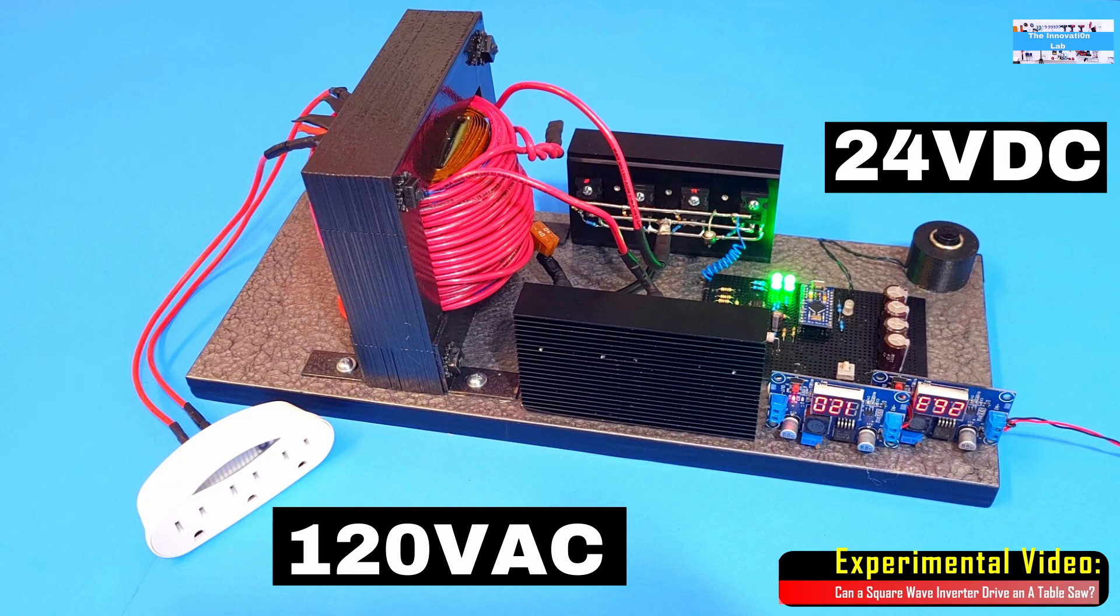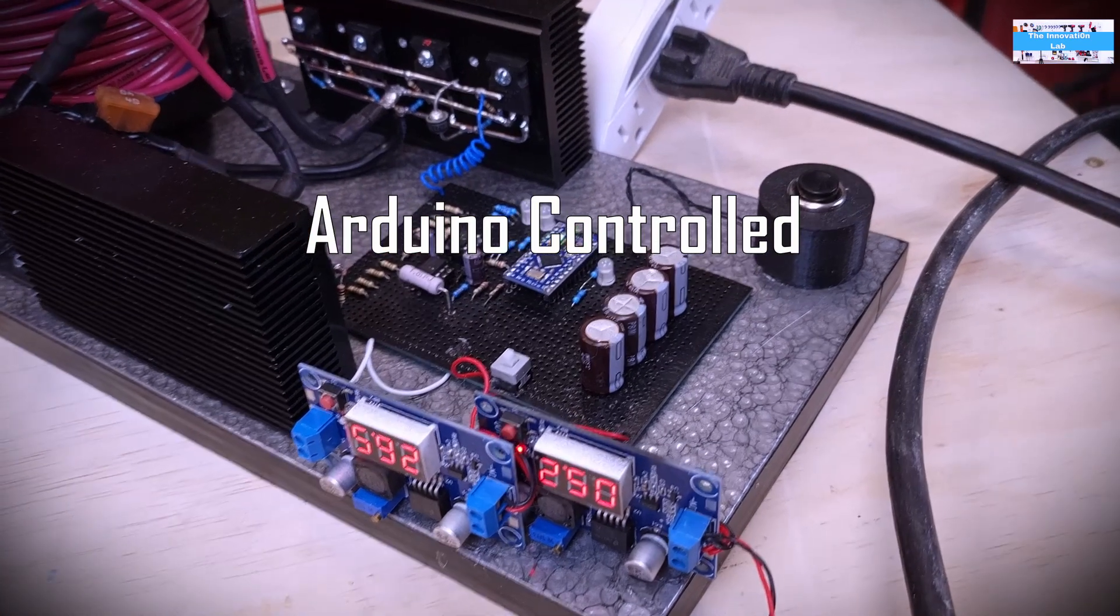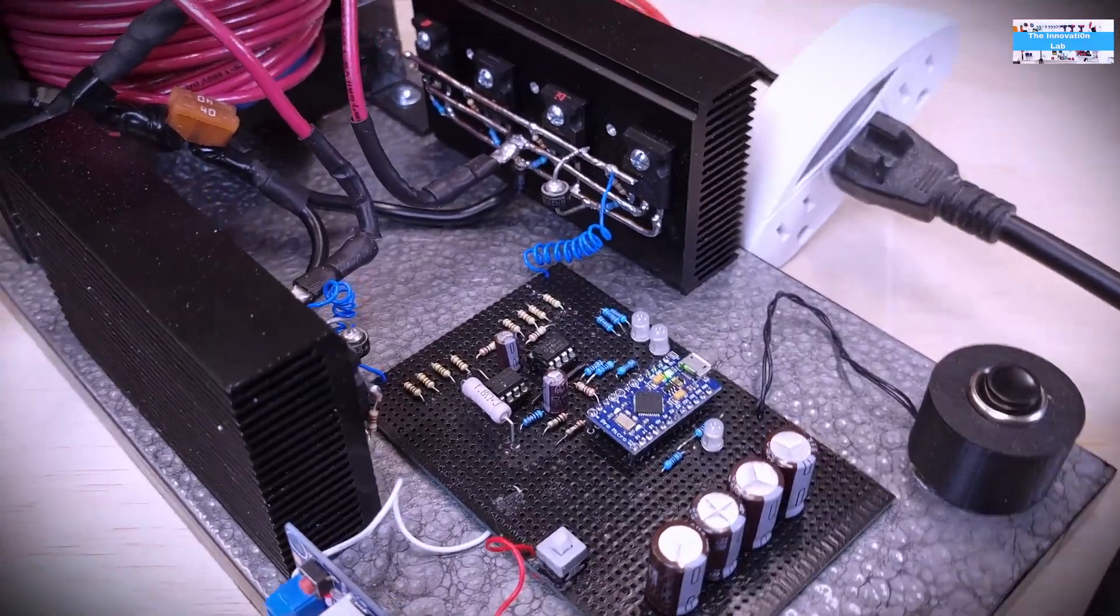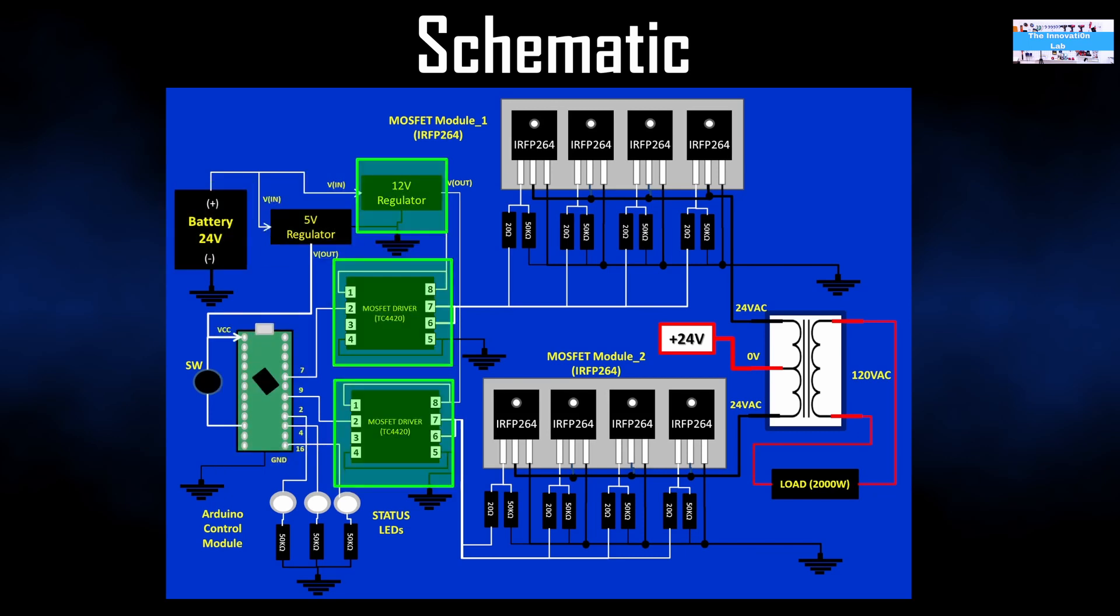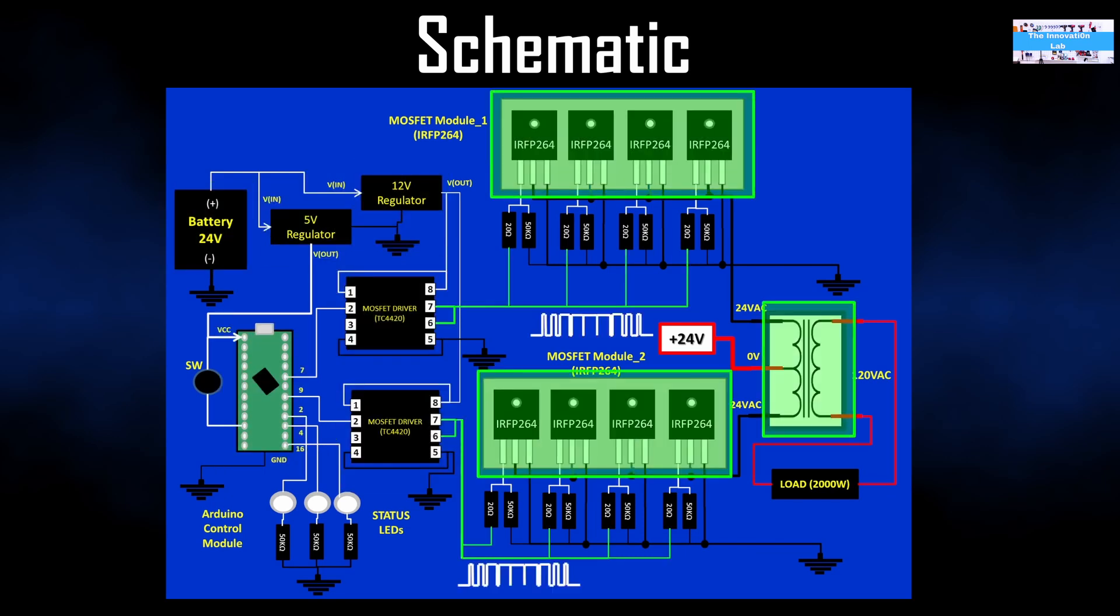I made a video to show this design. If you like you can go check out the video but it's very simple. So I'm using an Arduino microcontroller to provide the square wave pulses that drive the MOSFETs and I'm using this transformer, a center tap step up transformer, to produce the AC that we need.